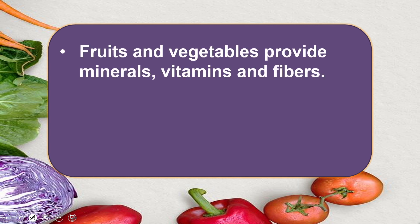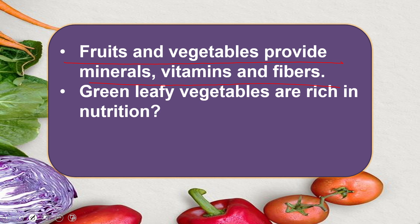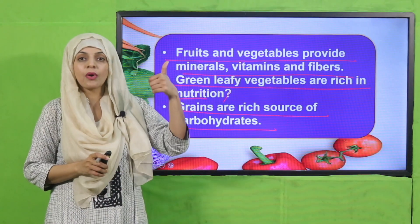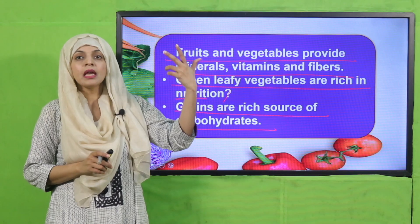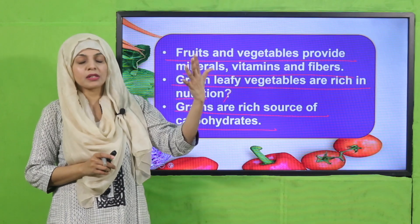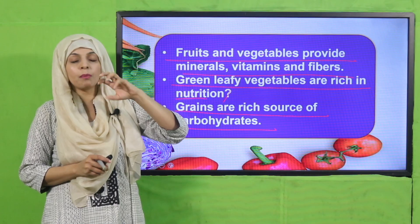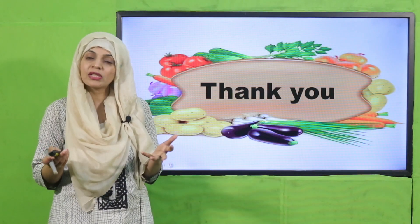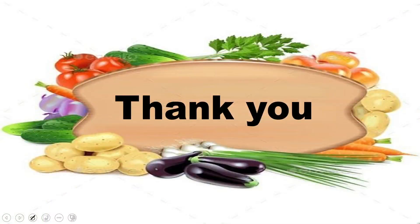Now is the time for wrap-up. Today we have learned that fruits and vegetables provide minerals, vitamins and fibers. Green leafy vegetables are rich in nutrition. Grains are a rich source of carbohydrates. We have now completed all five primary food groups: dry fruits, meat, dairy, fruits and vegetables, and grains — all very important for our health. I hope you enjoyed today's lecture. Keep everybody around you safe, have a good day, thank you so much and I love you.